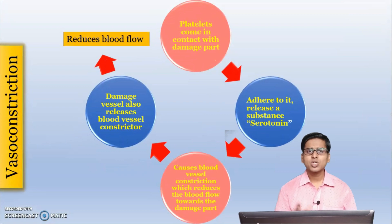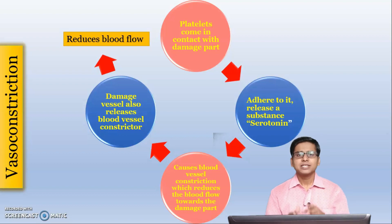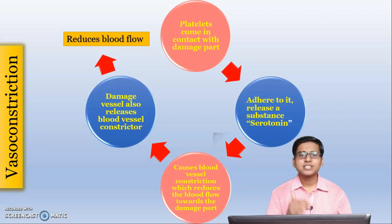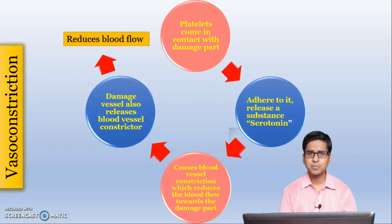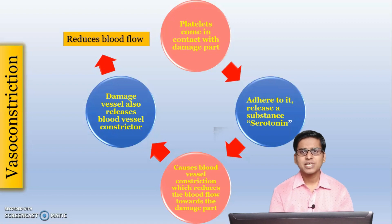The first stage is called vasoconstriction. Vaso means blood vessel and constriction means to reduce the size of the blood vessel. The platelets come in contact with the damaged part, adhere or stick to that damaged part, and release a substance called serotonin. This serotonin causes blood vessel constriction — vasoconstriction — which reduces blood flow towards that damaged part, preventing further loss. Not only do platelets produce vasoconstrictors; the damaged blood vessel also produces different vasoconstrictors to reduce blood flow. Together, all of them reduce the blood flow and prevent further blood loss. This is Stage 1.